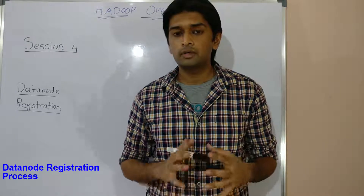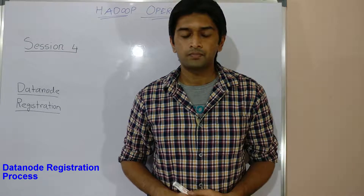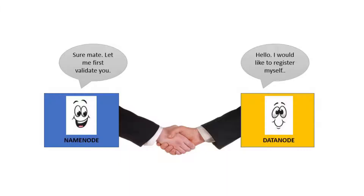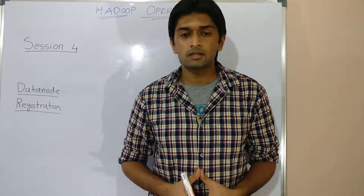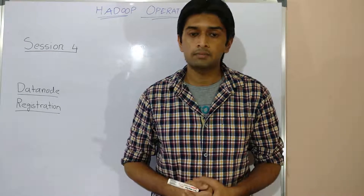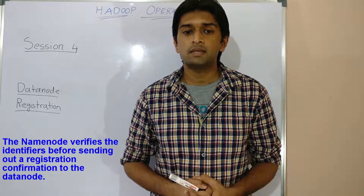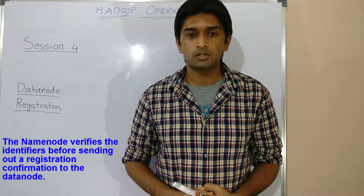Now let's talk about the data node registration process during name node startup. During a name node startup, the data node contacts the name node to perform a handshake. This includes sharing identifiers like the cluster ID, block pool ID, and namespace ID. The name node verifies these identifiers before sending out a registration confirmation.